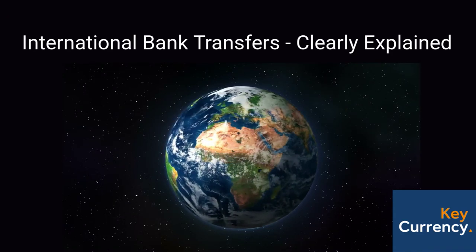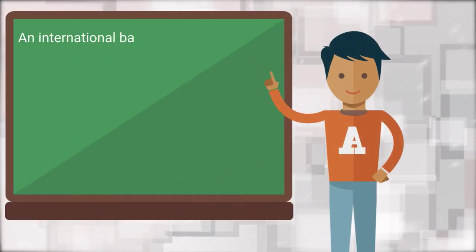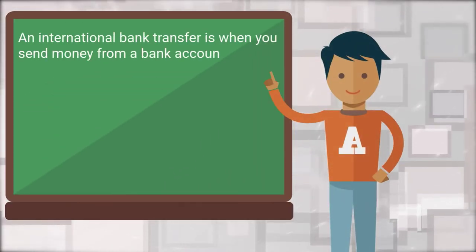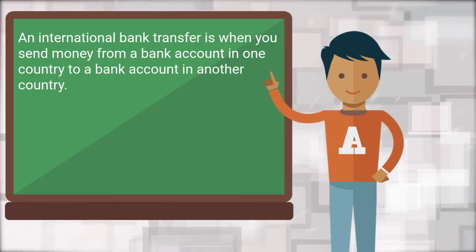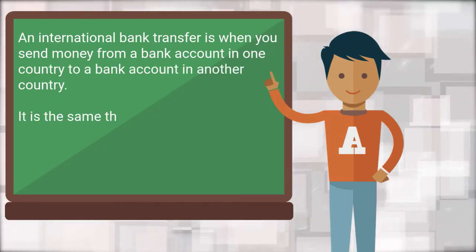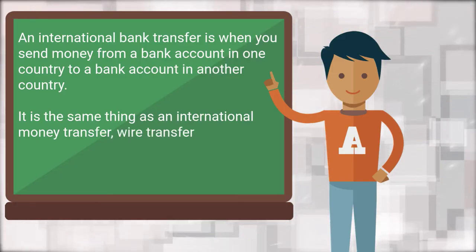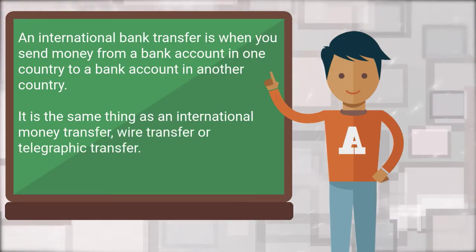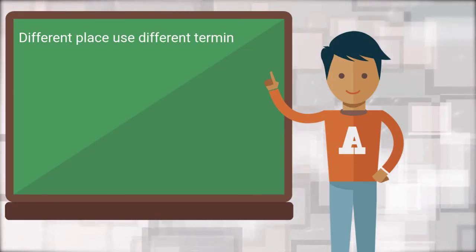International bank transfers clearly explained. An international bank transfer is when you send money from a bank account in one country to a bank account in another country. It is the same thing as an international money transfer, wire transfer, or telegraphic transfer. Different places use different terminology.